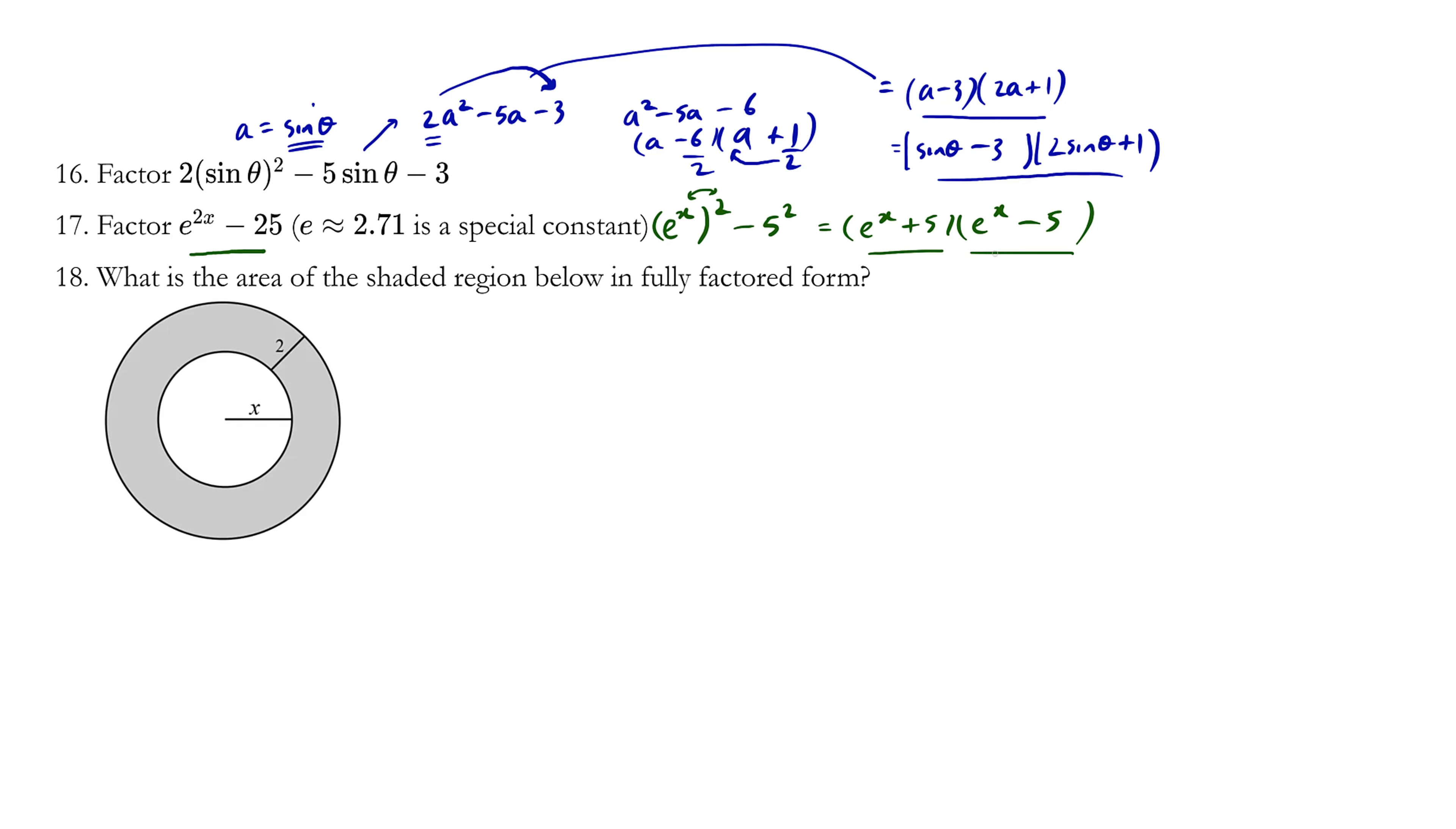Let's try this last question, just practicing our factoring skills. Let's try to find the area of this shaded region. We know this is a circle, and the large radius is going to be x, which is the inner radius plus two more units.